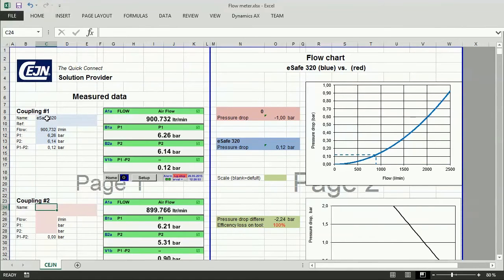Do the same with the competitor's coupling: flow, P1, and P2.